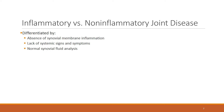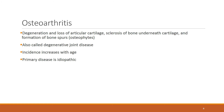Joint disease can be inflammatory versus non-inflammatory. We can differentiate them: non-inflammatory means there is no synovial membrane inflammation, no systemic signs and symptoms, and synovial fluid analysis comes back normal. Inflammatory joint disease is more systemic, while non-inflammatory is more localized.